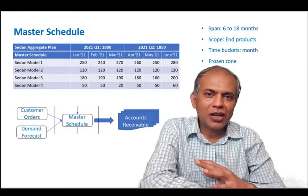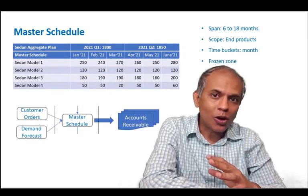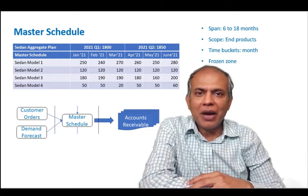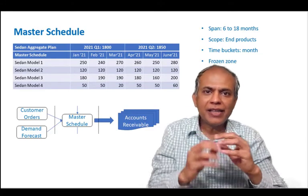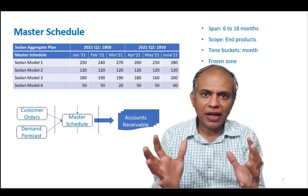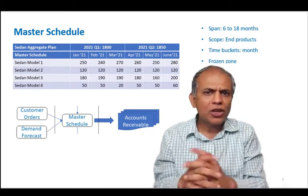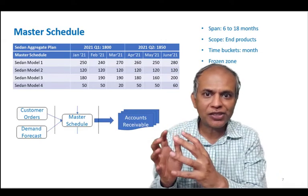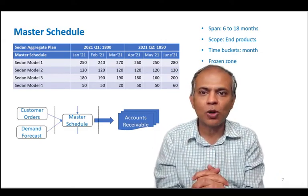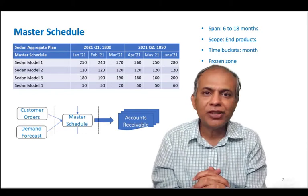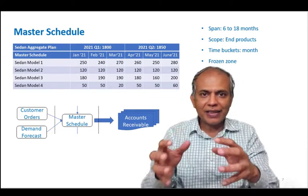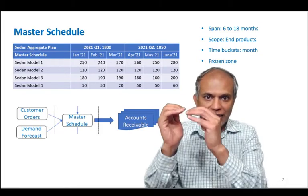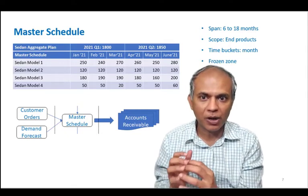Step two is creation of master schedules, or Master Production Schedules — MPS. In the master production schedule, I disaggregate the production plan or aggregate plan that we had created. In the previous video, we said that based on my business strategy, I need to produce 1,800 sedans in quarter one and 1,850 sedans in quarter two. So we disaggregate this in our master schedule — monthly, and from product groups down to individual end products.